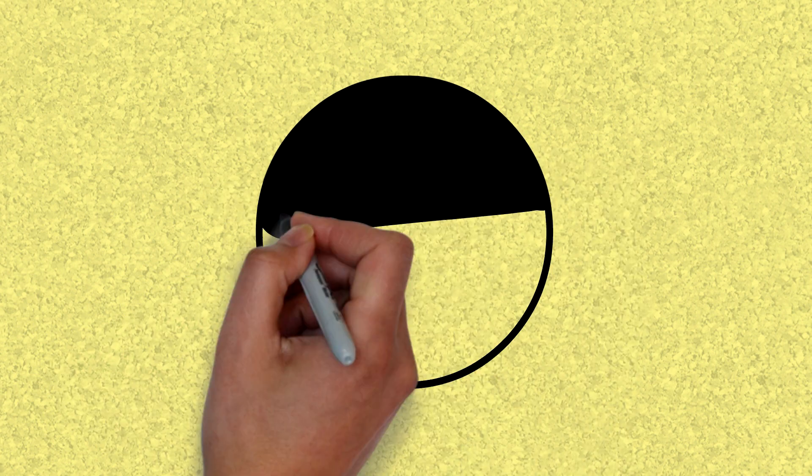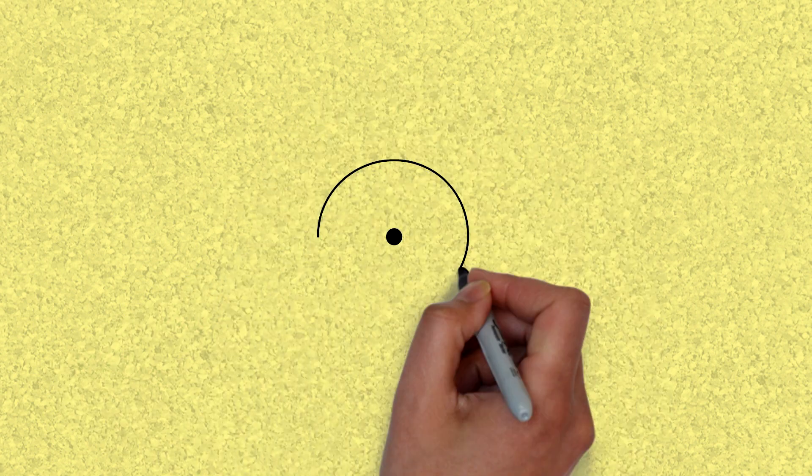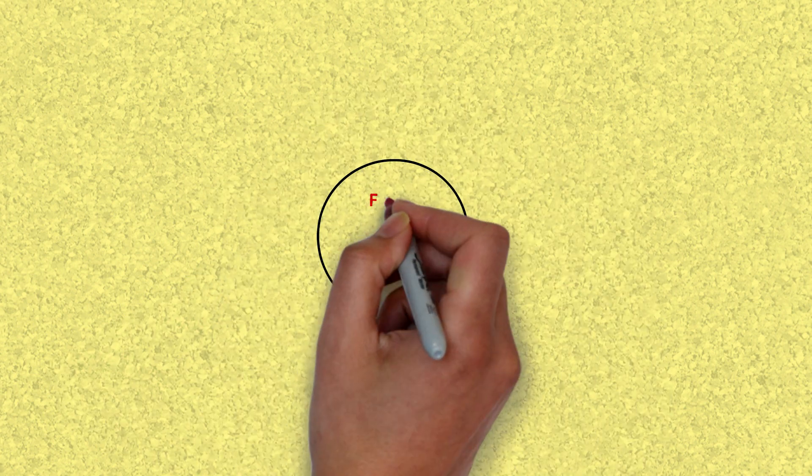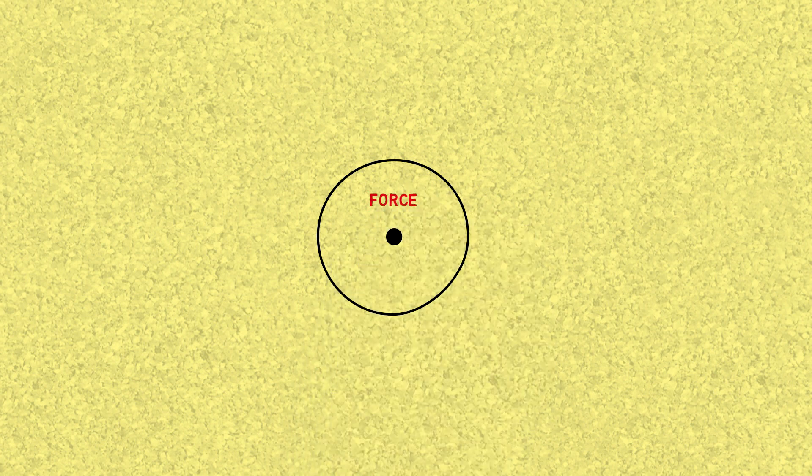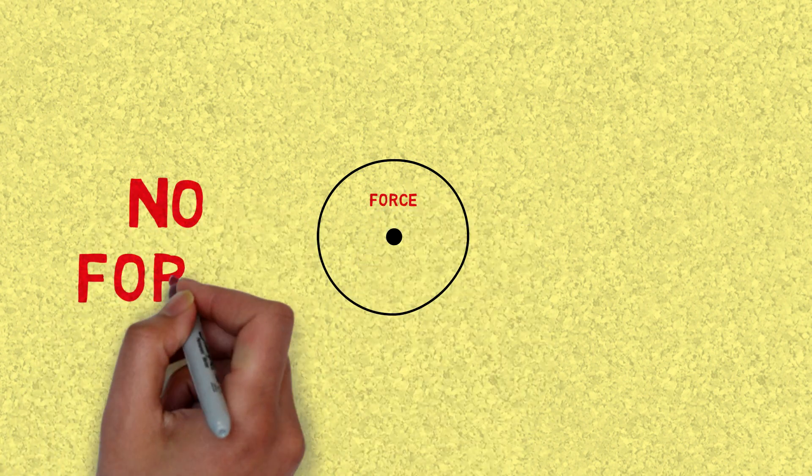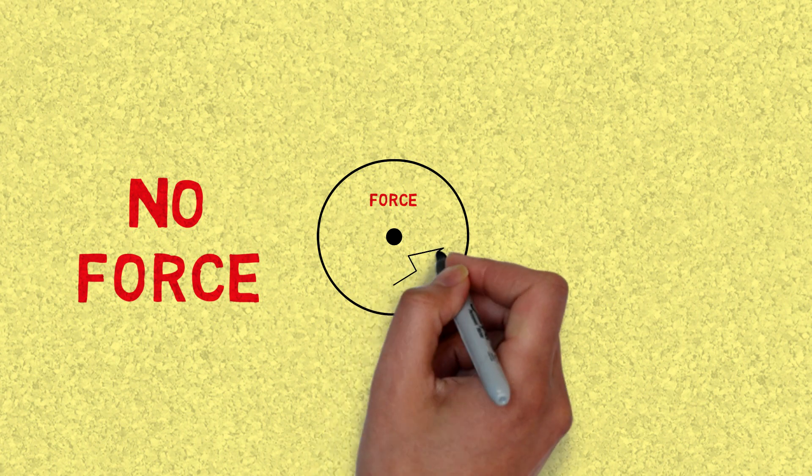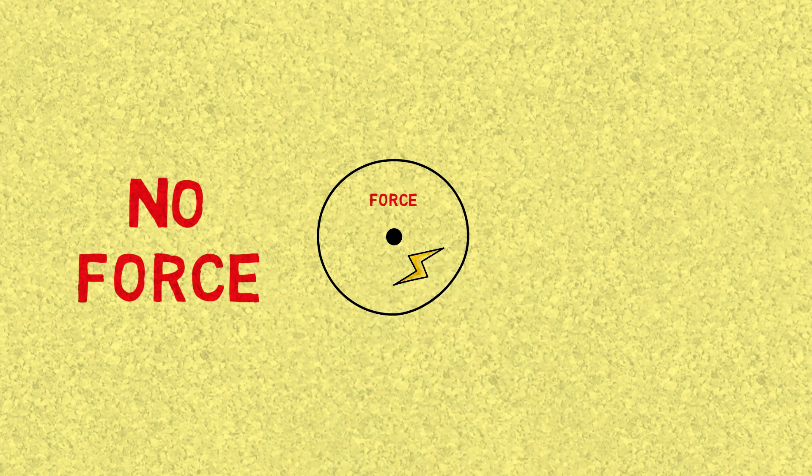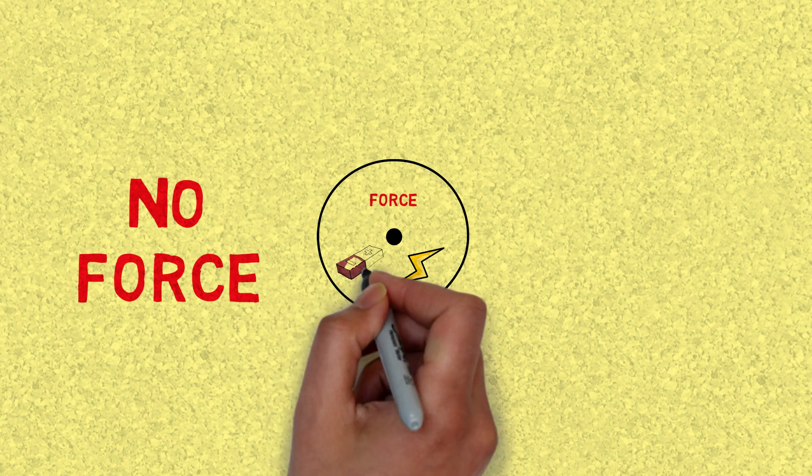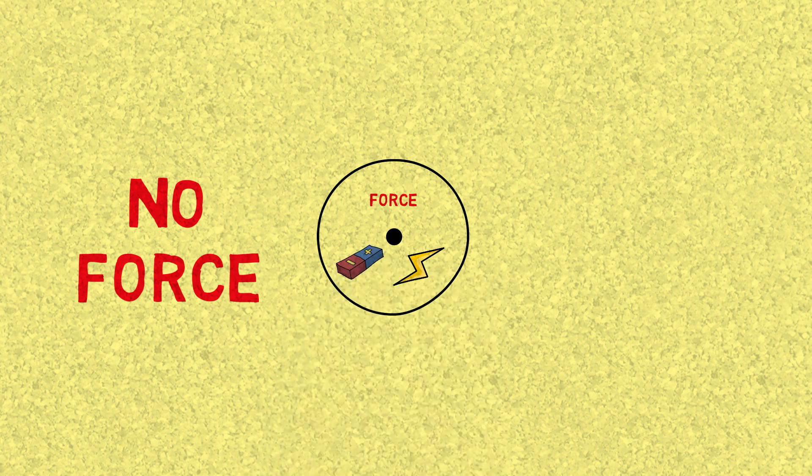So a field is the area around a point or an object where a force exists. For electric fields, for example, it is the area around a charge where electric force exists. And for magnets, it's just the magnetic force which we spoke about earlier around a magnet or a magnetic object.